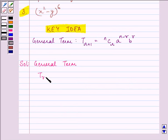T r plus 1 is written as nCr a raised to the power n minus r, b raised to the power r. And we are given x squared minus y raised to the power 6.